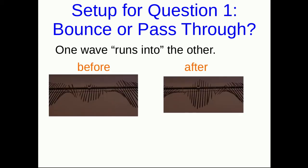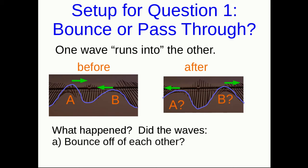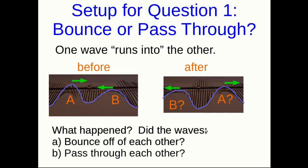When one wave is running into another, what happens? Here's the before and after picture of these two crests meeting, with superimposed traces and velocity vectors. I'm going to name these two crests A and B, and ask: what happened? Did they bounce off of each other — in which case this crest here is A, having bounced off of B and now heading back the other way? Or alternatively, did they pass through each other — in which case this is A, still going the direction it was going before, having passed through B, and this is now B? You decide — you can tell by looking at them.